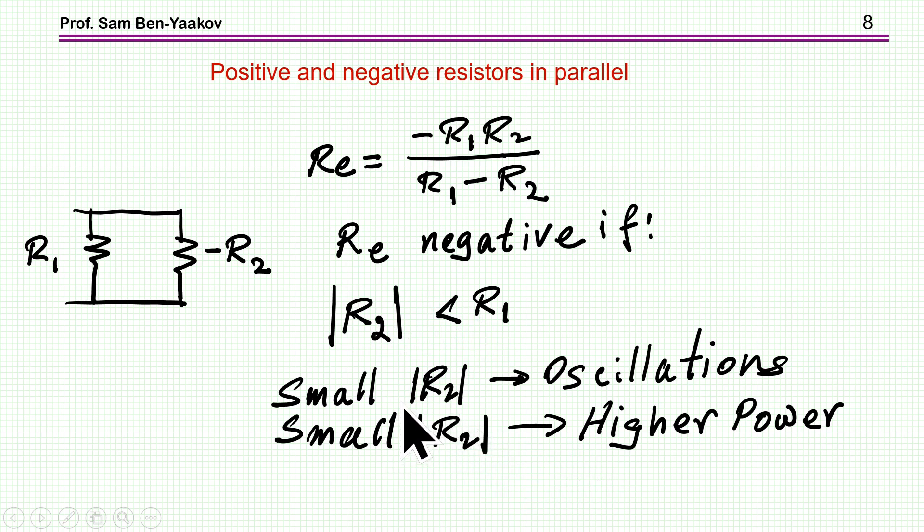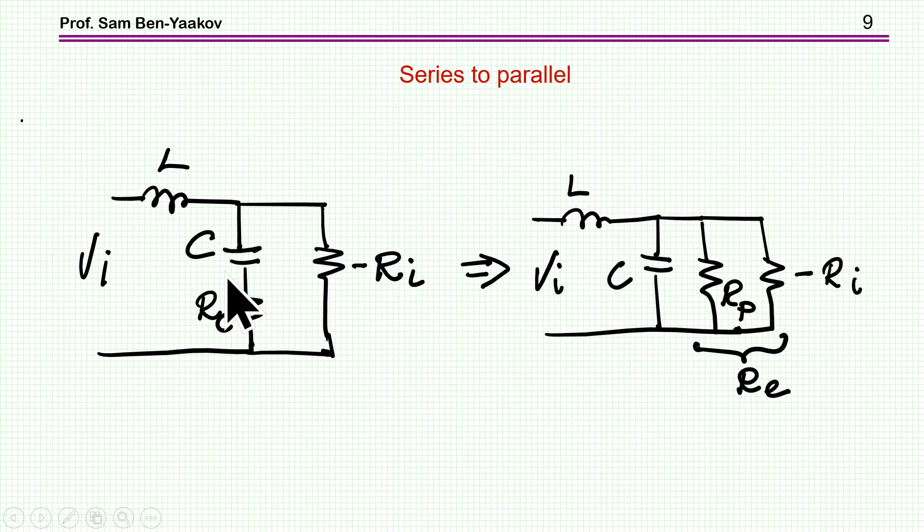And this means that if we have two resistors, one positive and one negative, if R2 is indeed smaller than R1, that is the absolute value, then we are going to get oscillation. Notice that, what does it mean that R2 is small? R2 is small means that we have higher power. The higher the power, the lower they are. So we can understand now that the system could be stable at low power, and then would be unstable at higher power.